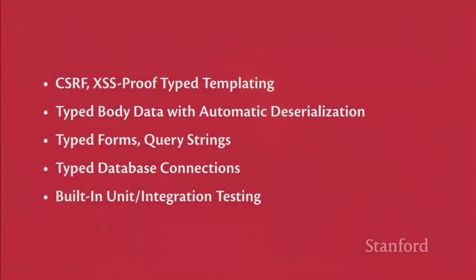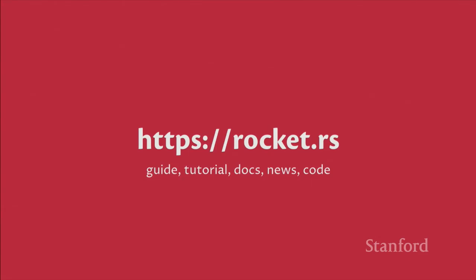There's a lot more to Rocket I didn't cover: CSRF and cross-site scripting prevention through a typed templating engine that compiles with immunity to those vulnerabilities built in; typed body data with automatic deserialization (as we saw with forms); typed query strings; typed database connections; and a built-in unit and integration testing framework. If you want to learn more, visit rocket.rs — there's a guide, tutorial, documentation, API docs, news, and a link to the GitHub repository. Rocket is MIT and Apache 2.0 licensed — you choose.